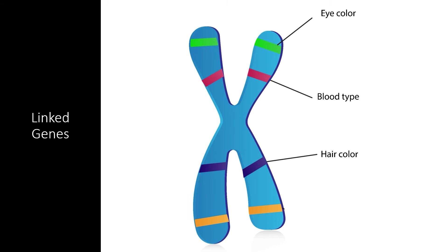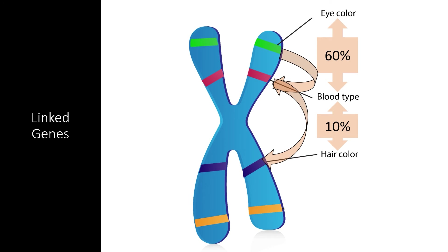For example, if we measure the frequency that eye color and blood type are inherited together, we might get something like 60%. If we measure hair color and eye color, we might get something like 10%. Since there is linkage between these traits, we know they are all on the same chromosome. But eye color and blood type are closer together since they are inherited together more often. Genes that are closer together are separated less often by crossing over, so we can effectively map a chromosome based on how far apart certain linked genes are.